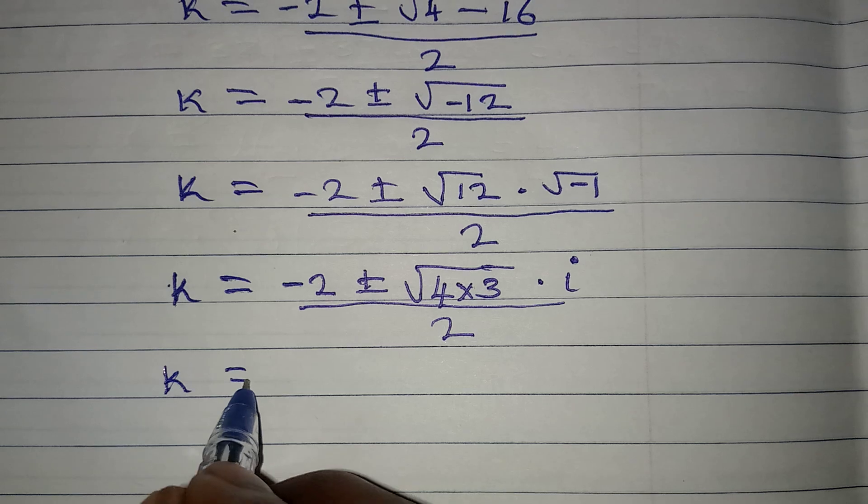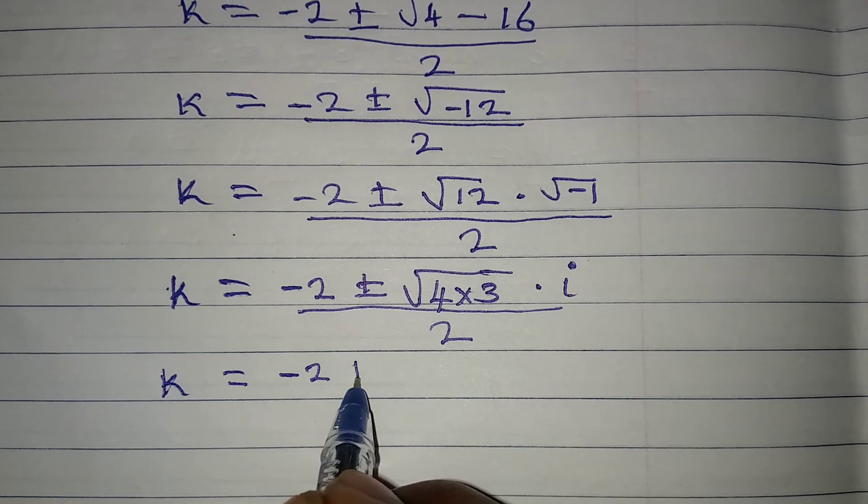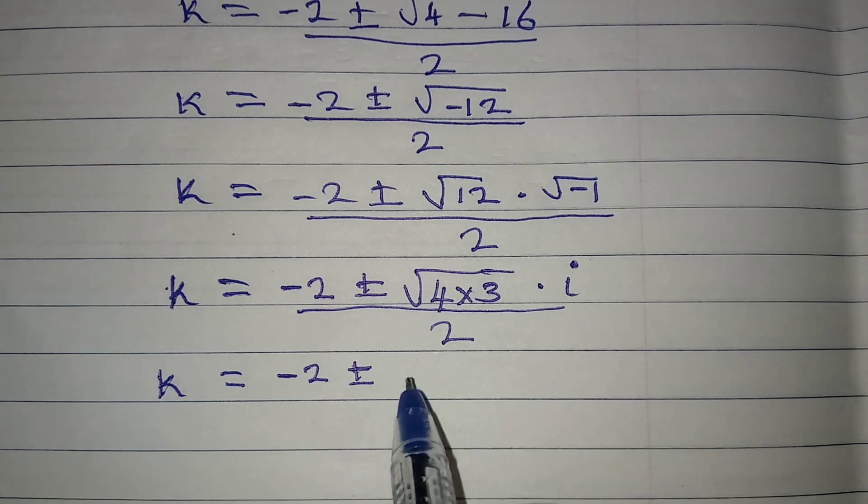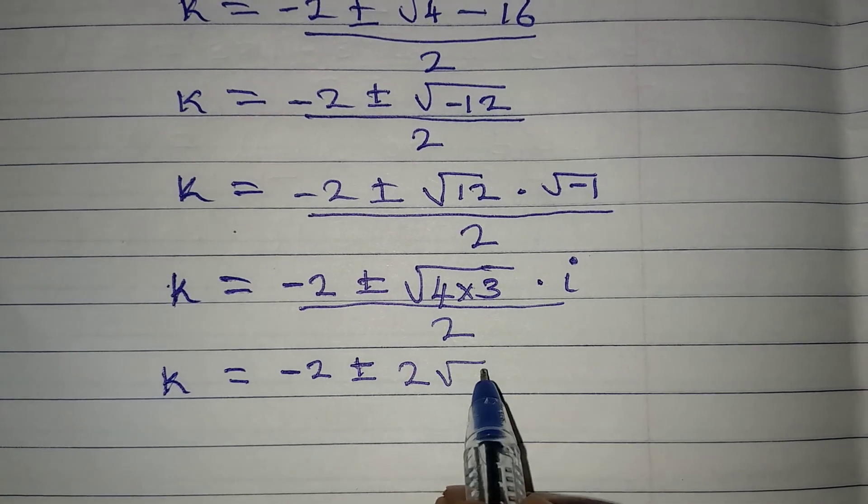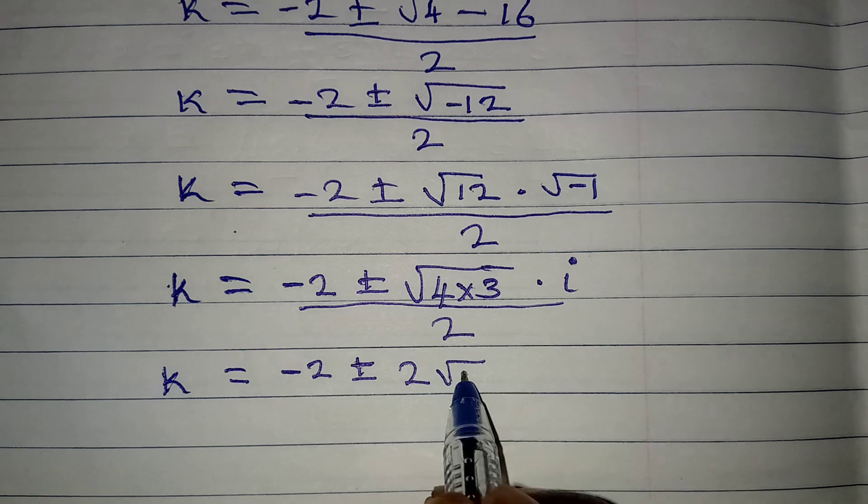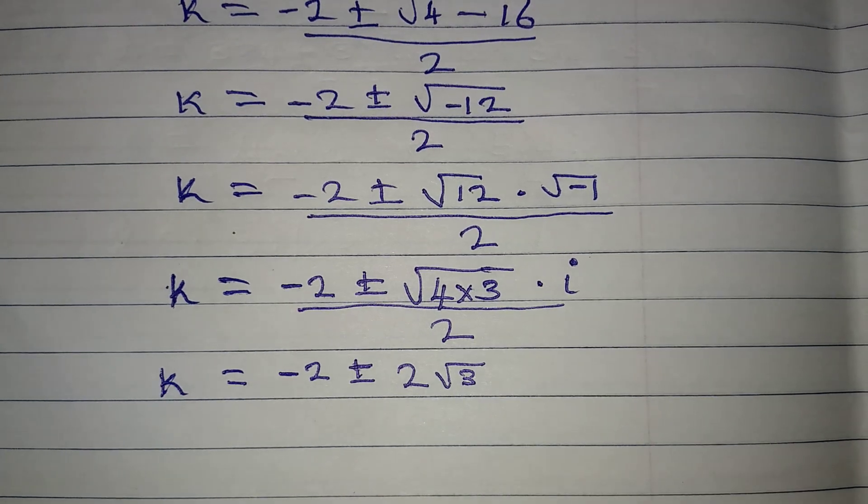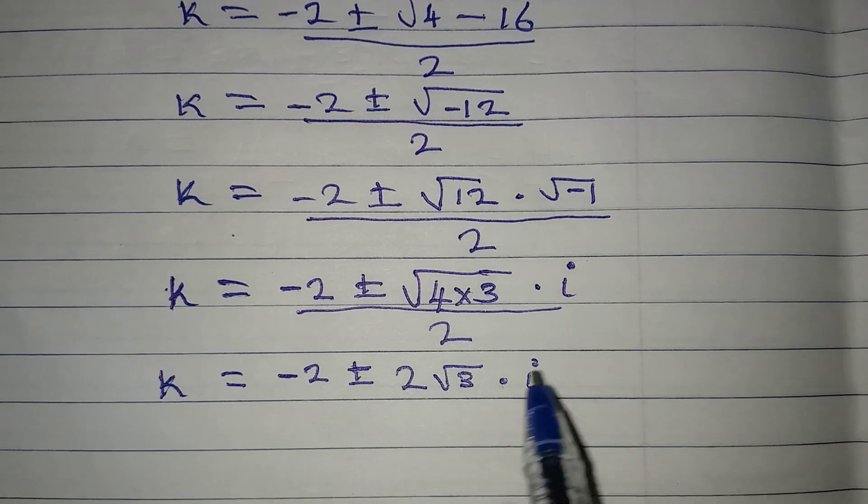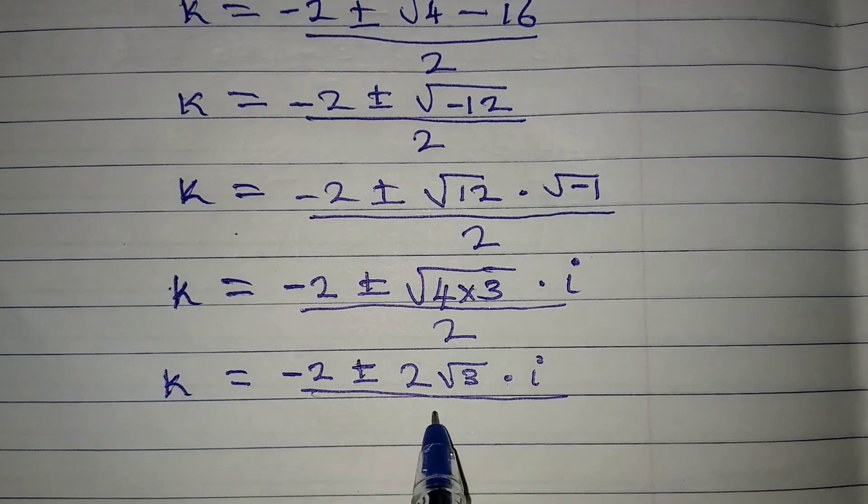So if we continue, k will be equal to -2 ±, then square root of 4 is 2. Square root of 3 is still there because it will give us decimal. And I don't want decimal. Then multiply by i. This will be all over 2.